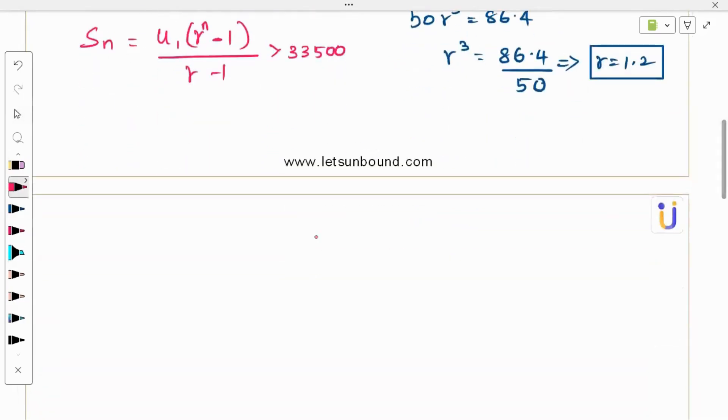So u1 is 50. This implies 50 times 1.2 power n minus 1 by 1.2 minus 1 is greater than 33,500. So you simplify as much as possible. Then we can go back to n solve. So 1.2 power n minus 1 divided by 1.2 minus 1 is 0.2. And that's 50 over there greater than 33,500.